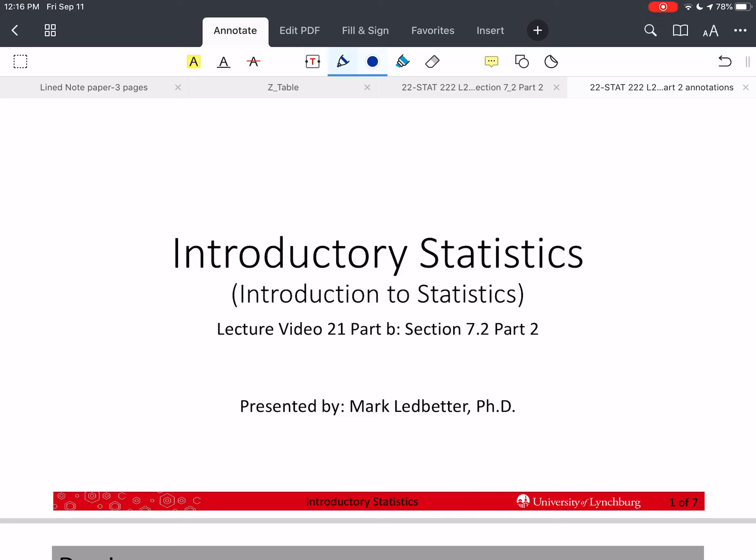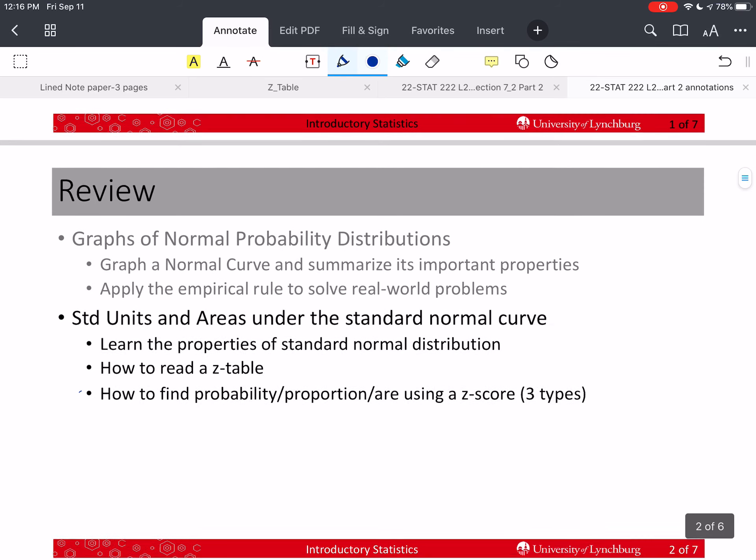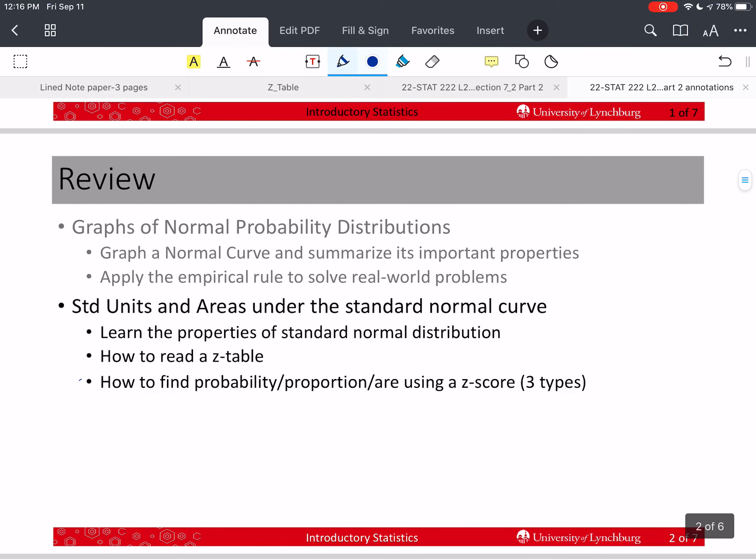Welcome back to our series on probability theory. I'm Mark Ledbetter. This is lecture video 21 part B, and we're in the second part of section 7-2 where we're talking about the standard normal distribution. Last time we learned how to read the z-table and we started to learn how to find a probability using a z-score. And there are three types of problems this way. We went through the first,